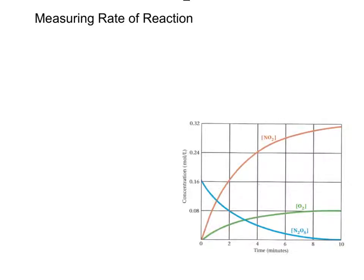So if you consider this reaction, where we have N2O5, which decomposes into 2NO2 and 1.5O2, the concentration of N2O5 decreases over time because it gets used up. And if you look at this graph here, if you follow the blue line, you'll see that the concentration of N2O5 decreases over time. You can see that the concentration is getting smaller and smaller.